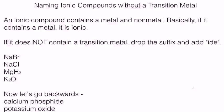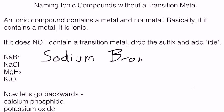If it doesn't contain a transition metal, we drop the suffix and add ide to it. You will always write out the full name of the first element, which is always the cation. In our first problem, sodium bromide, NaBr, you would write as sodium. Then bromine is the element, but remember, we drop the suffix I-N-E and we add I-D-E. So it's bromide.